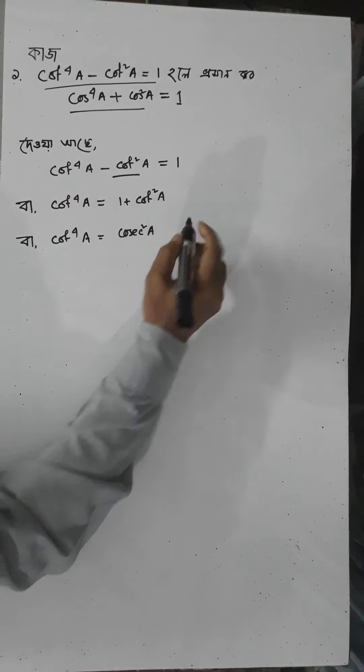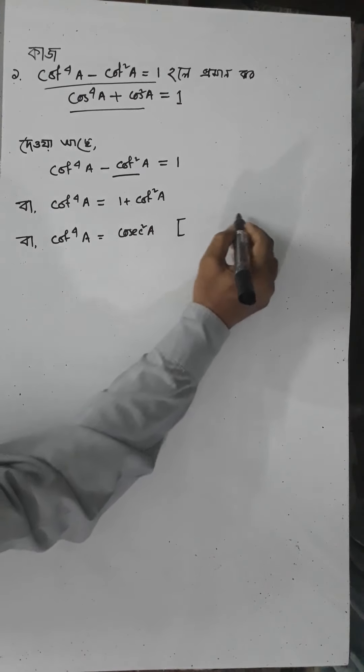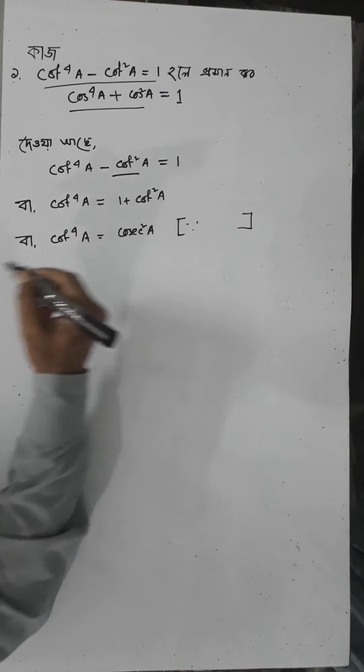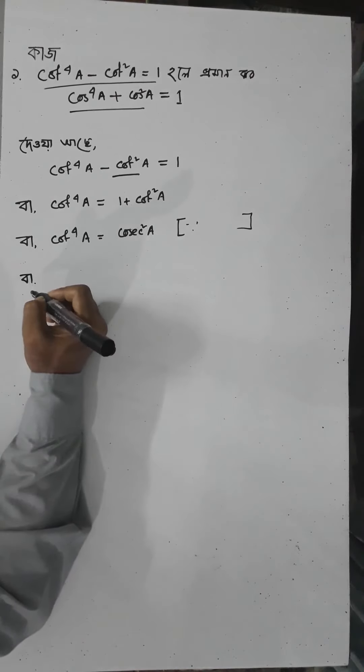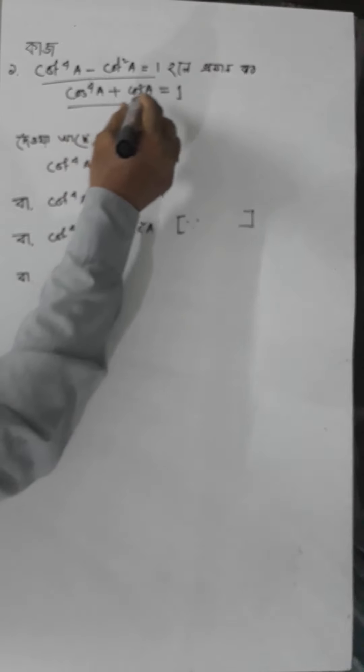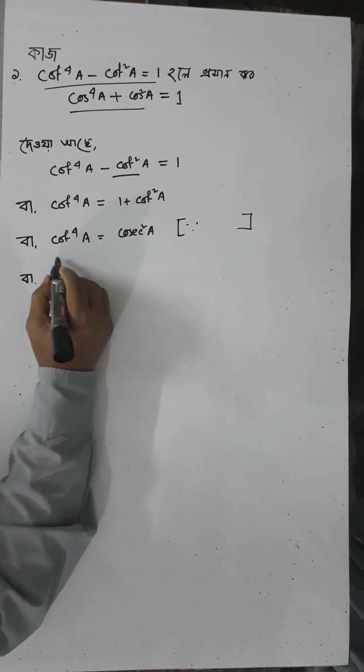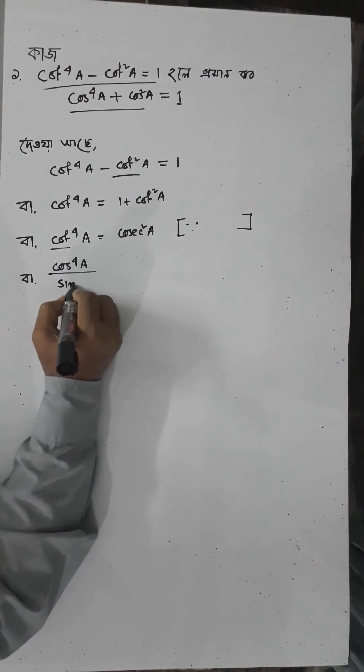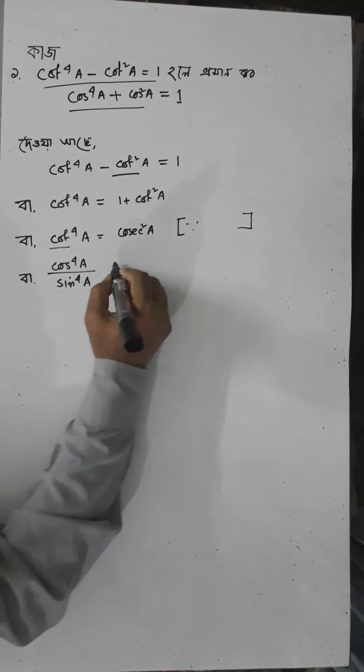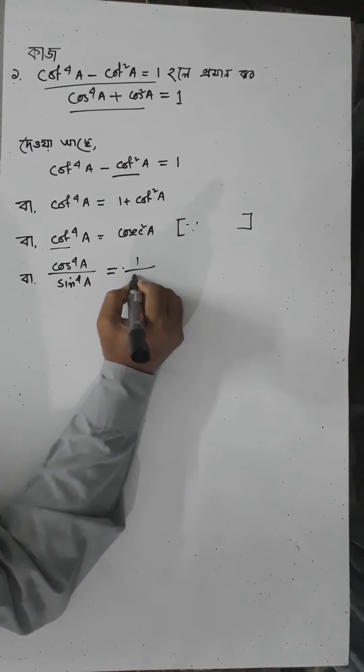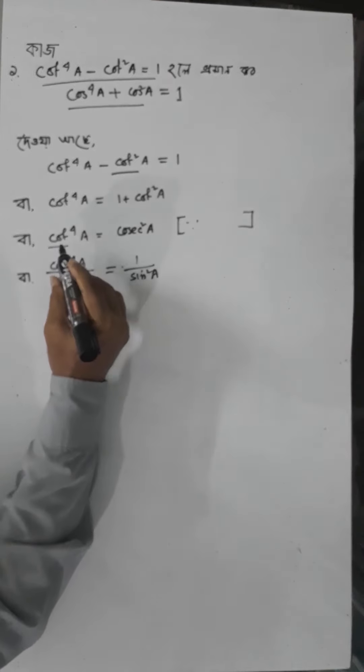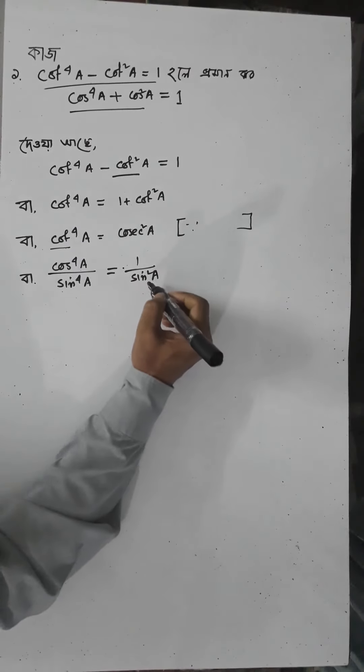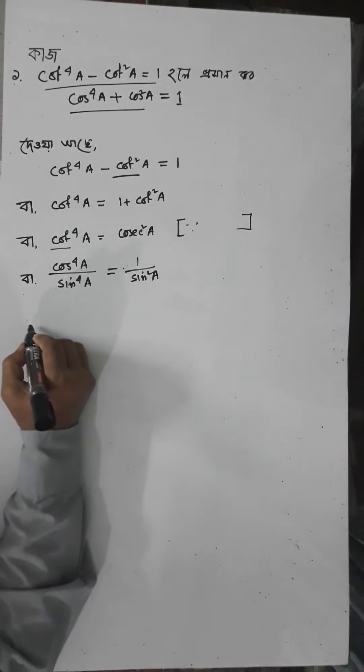1 plus cot²a equals cot²a divided by 2. Now we are going to write cos⁴a equals cot²a. Cos⁴a divided by sin⁴a equals 1 divided by sin²a, which means cot²a equals 1 by sin.